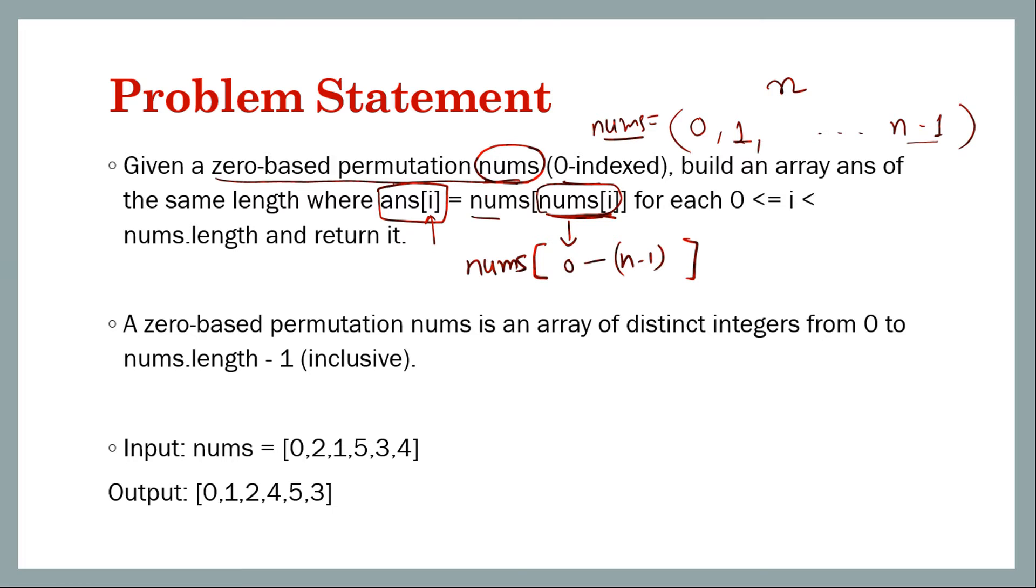Let's take an example. We have this input with length six, so zero to five, and you can see all the values lie in this range. The result is of the same length. At index zero, we find nums[0], which is zero, and nums[nums[0]] is nums[0], which is also zero.